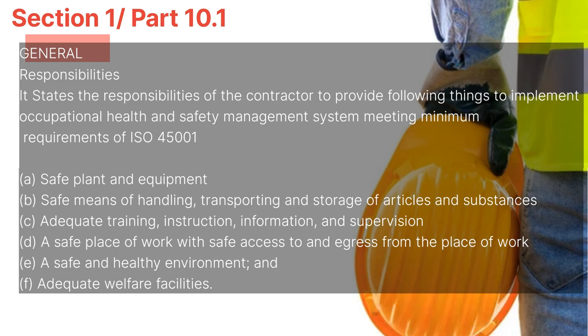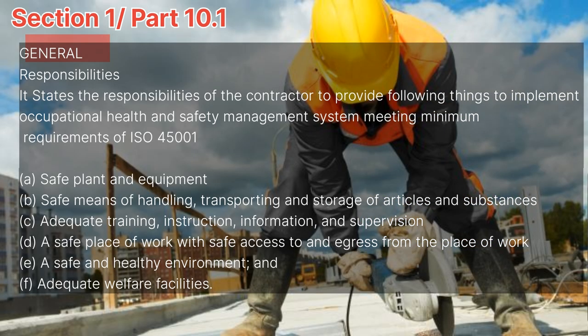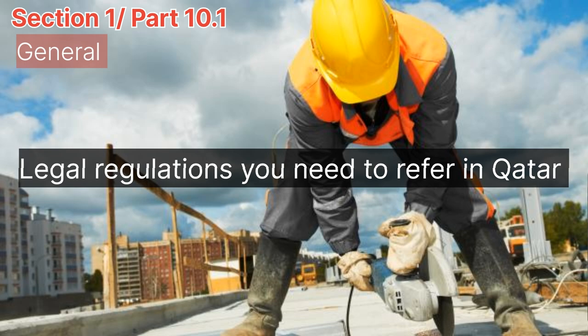The contractor is responsible for providing: a. Safe plant and equipment. b. Safe means of handling, transporting and storage of articles and substances. c. Adequate training, instruction, information and supervision. d. A safe place of work with safe access to and egress from the place of work. e. A safe and healthy environment. f. Adequate welfare facilities.